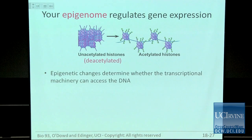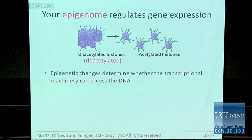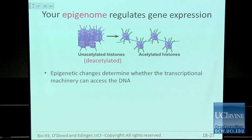We talk about how the availability of specific transcription factors regulates whether a gene gets expressed. Before that even, we talk about how the state of chromatin regulates gene expression. If the DNA is in a tightly compacted condensed state, genes aren't expressed very well, because all of the transcriptional machinery cannot access the DNA. When the DNA is in a more open state, RNA polymerase and transcription factors can bind and cause gene transcription.